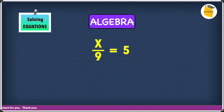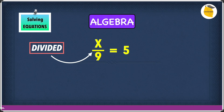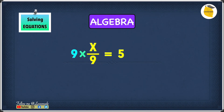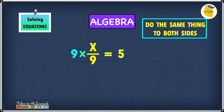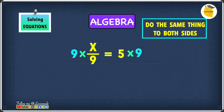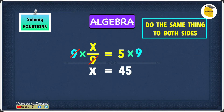Now let's have a look at: x over 9 equals 5. In this example we have a division question, because x over 9 obviously means x is being divided by 9. We can undo this divided by 9 by multiplying by 9, because 9 times x over 9 will undo it. Remember, we need to do the same thing to both sides, so we multiply the other side by 9 as well. The 9 on top and the 9 on the bottom cancel each other out, leaving just x. The other side is 5 times 9, which is 45. So our answer is x equals 45.